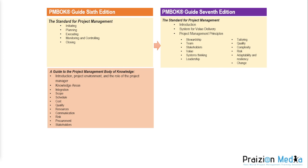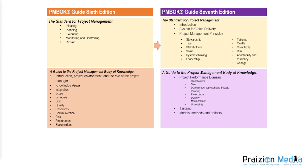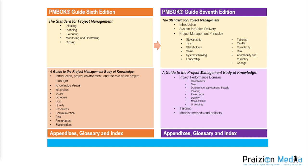In the 7th edition, you don't have knowledge areas. Instead, you have things called performance domains, which are classifications of things that could happen in project management. They are not broken down by process group or knowledge area, which makes them more esoteric and less familiar to project managers who have gone through the 6th edition. That's why a lot of people are not warming up to the 7th edition. There are also appendices, the glossary, and the index in both publications, plus PMI Standards Plus with additional information excluded from the 7th edition.